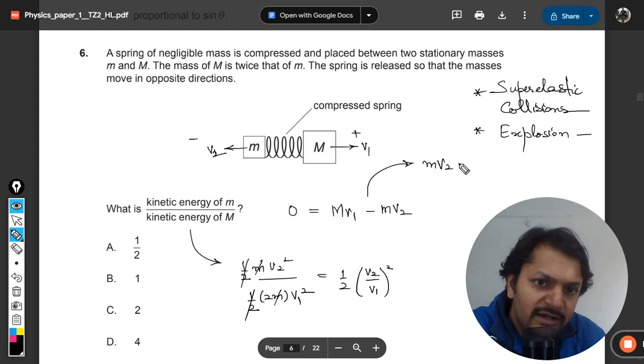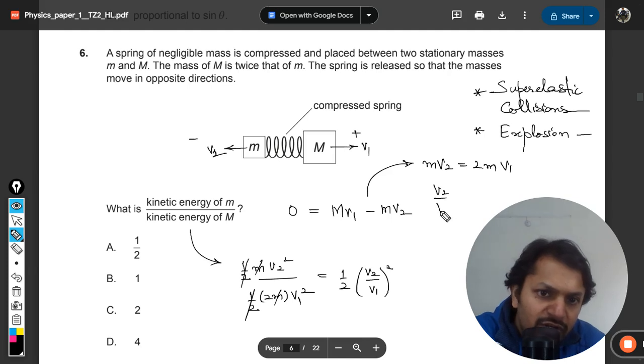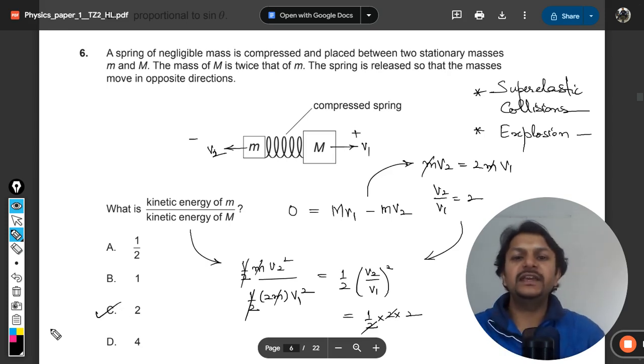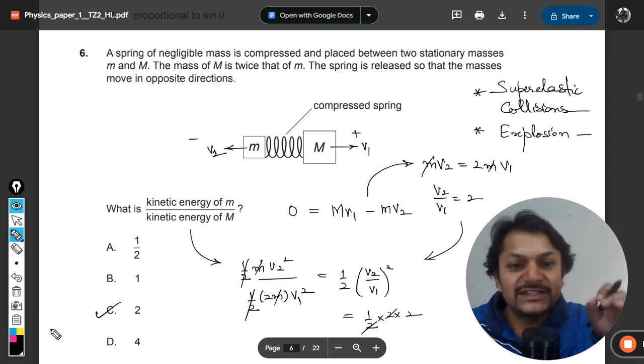This is going to the other side, this will become 2m v1. We want to find v2 by v1, so v2 divided by v1 is equal to 2. This is the value that we are going to substitute here, so it will be 2 times 2. Our answer will be C, and the answer will be 2.